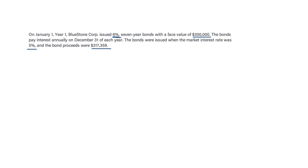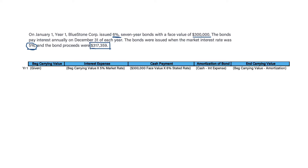We can see that the market rate is less than the stated rate, so we're offering a better rate than the market, meaning that we get to issue our bond at a premium — which is more than $300,000. The best way to tackle any bond question is to write out an amortization schedule for the entire life of the bond.